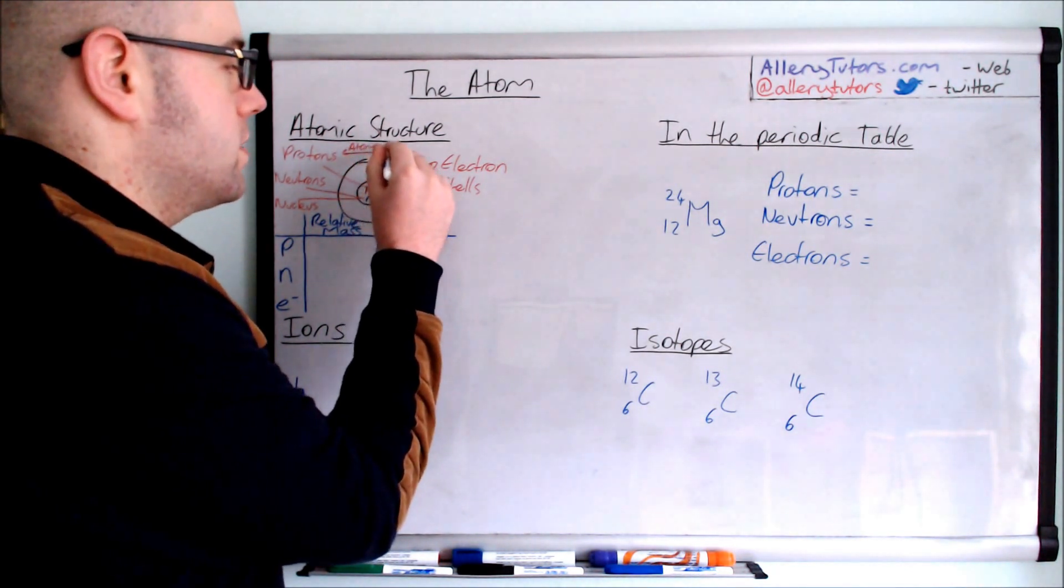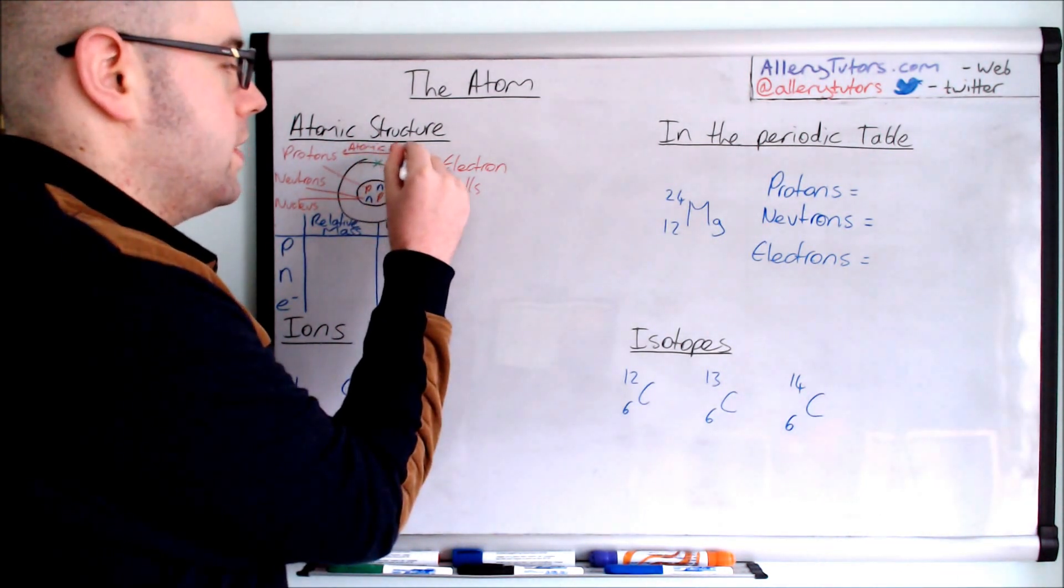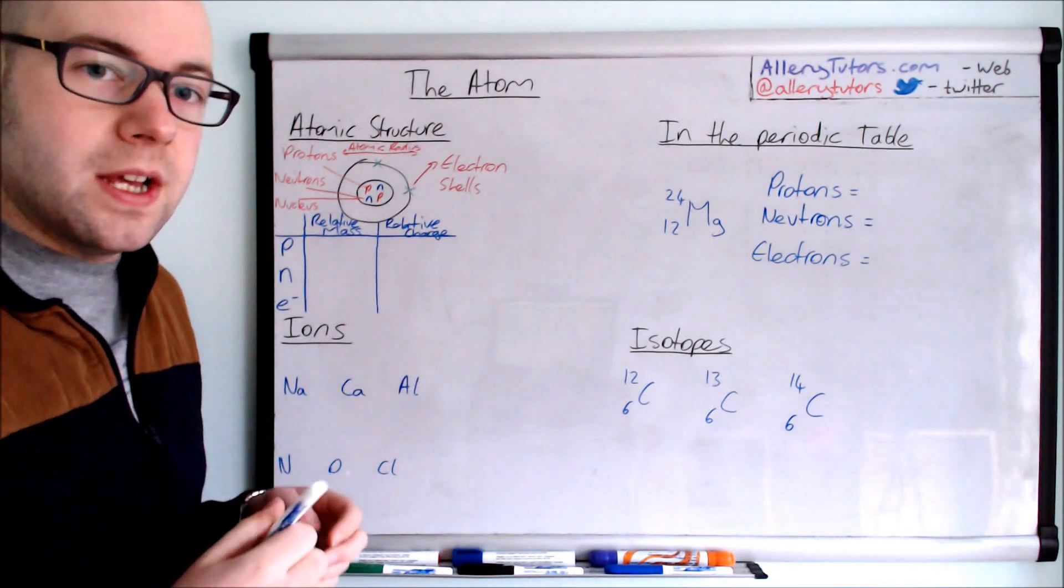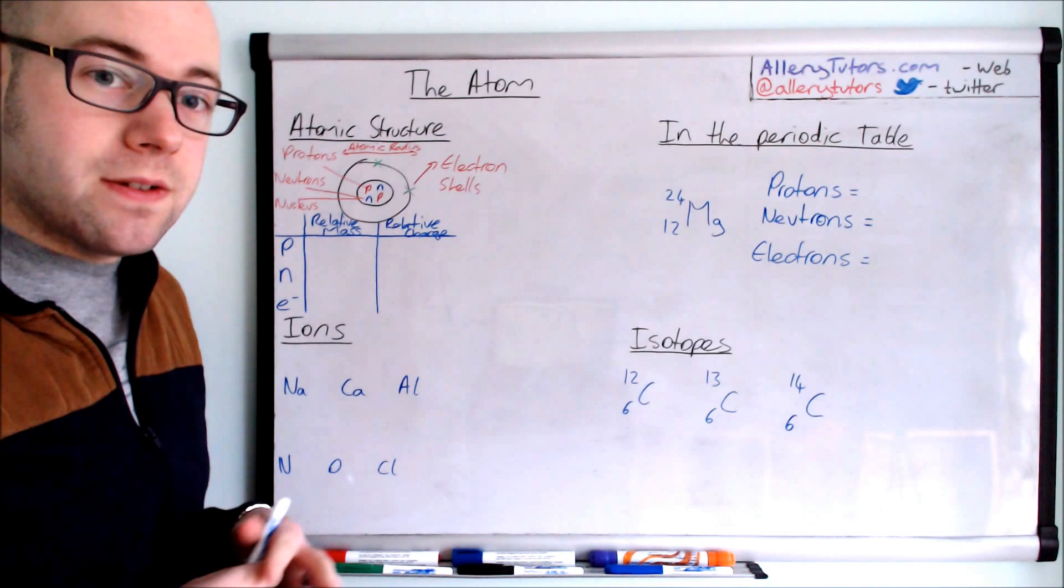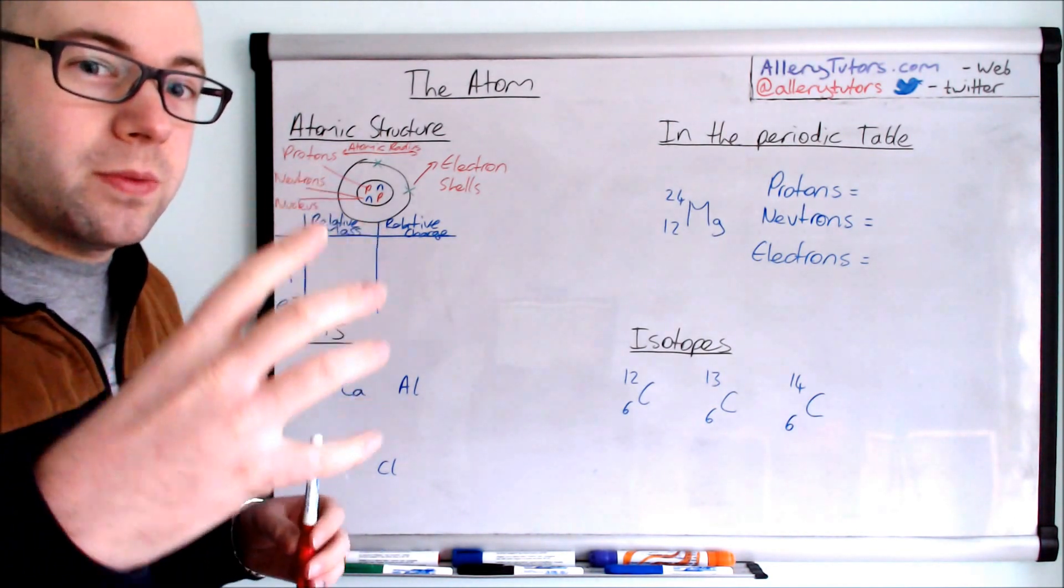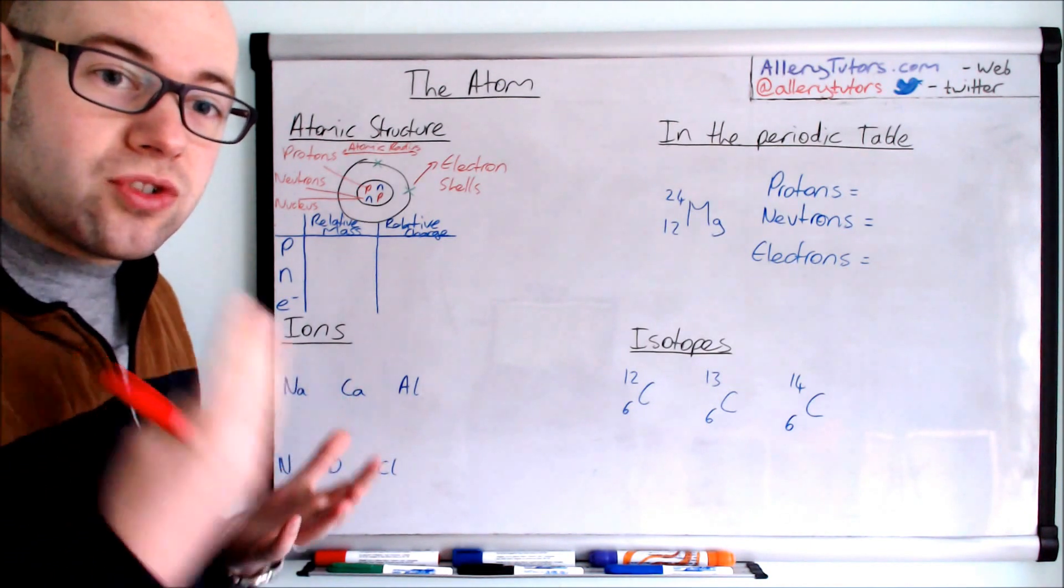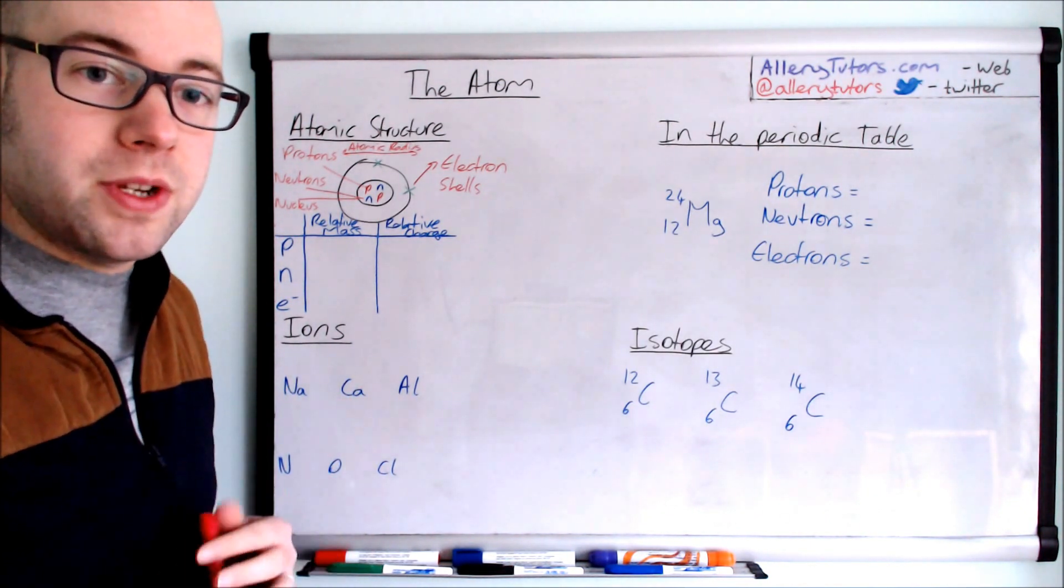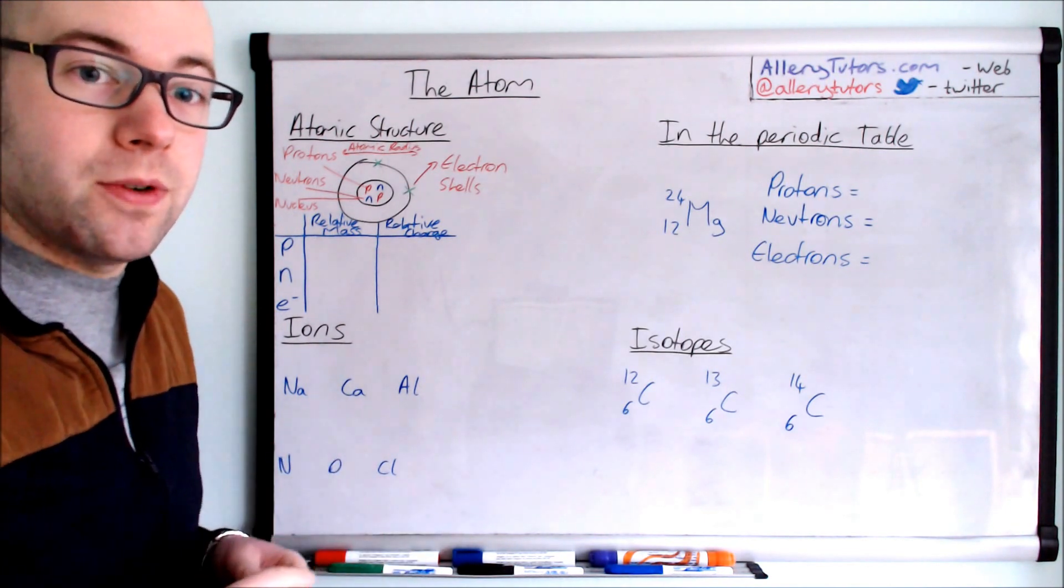Now this would be significant when you do trends or ionization energies because the bigger the atom the easier it is to remove an electron from the outer shell because it's further away from the nucleus. So actually these structures, understanding the structure of the atom is crucial especially when you are doing things like periodicity.